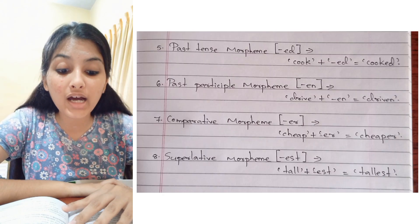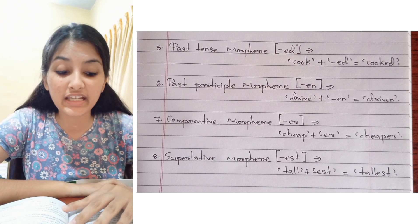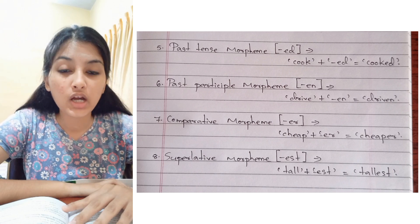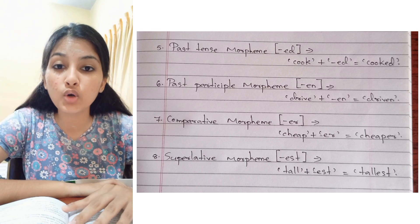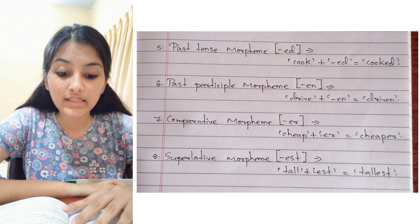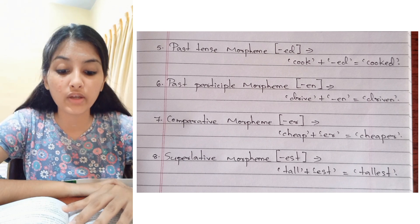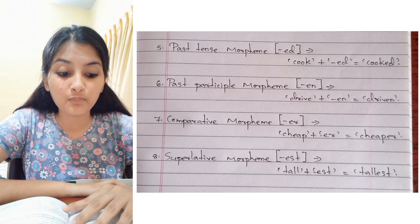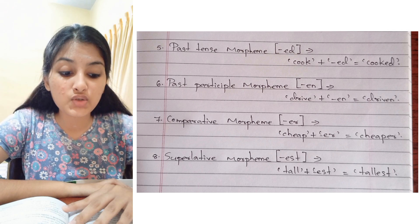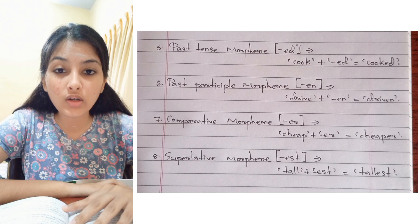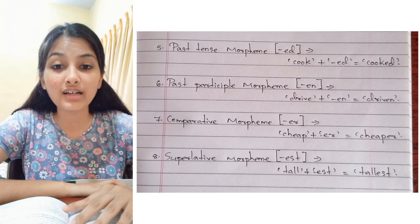The fifth is the past tense morpheme '-ed': cook + ed = cooked, as in 'John has cooked the food.' The sixth is the past participle morpheme '-en': drive + en = driven, as in 'John had driven the car yesterday.'